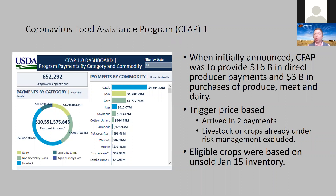We're also going to talk about debt forgiveness for socially disadvantaged farmers under the American Rescue Plan Act. So when CFAP was originally announced back in the spring of 2020, it was to provide $16 billion in direct producer payments and $3 billion in purchases of produce, meat, and dairy. This first round, CFAP 1, was a trigger price-based program. It took prices in January and prices in March, and if there was more than a 5% decline between those two days, that commodity would receive a payment. They actually broke it into two separate payments, with the idea that the second 20% would be issued if there were enough funds left over.